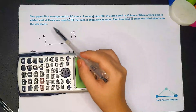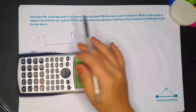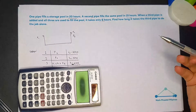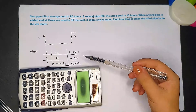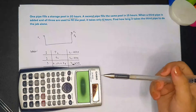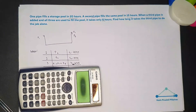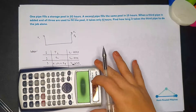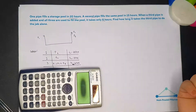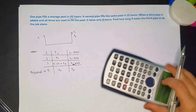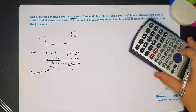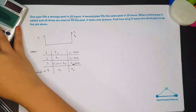There is a pool and we have three pipes: pipe one, two, and three. For the given, we have three scenarios. For the first scenario, only the first pipe is used, so it took 20 hours to fill the pool. For the second scenario, only the second pipe is used, so it took 15 hours. For the third scenario, a third pipe is added and all three pipes fill the pool in 6 hours. The question is: if using the third pipe alone, how long does it take to fill the same pool?